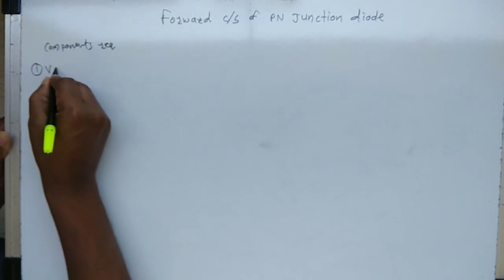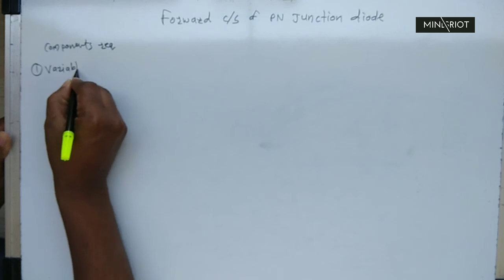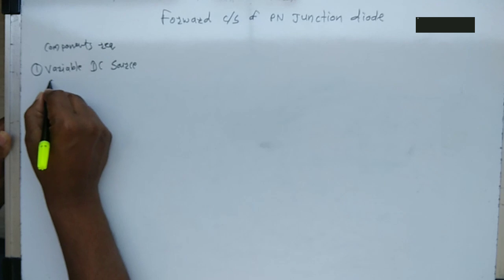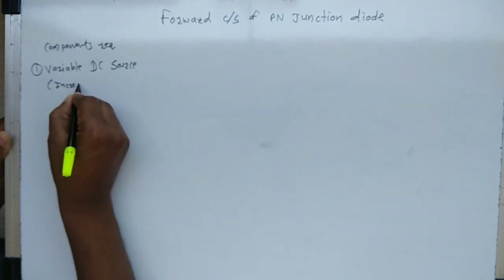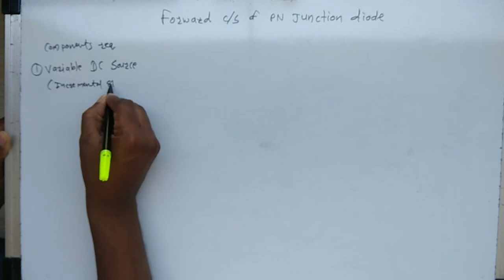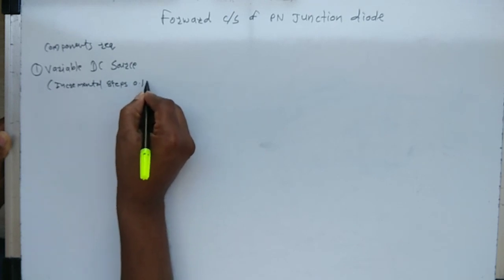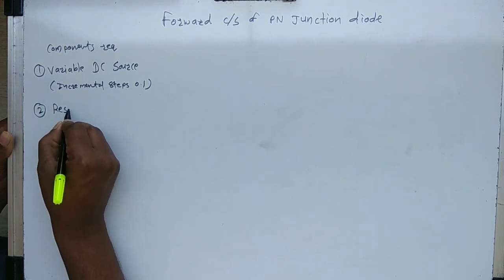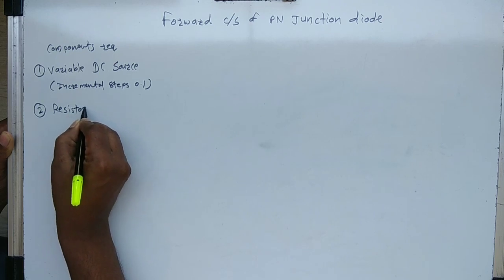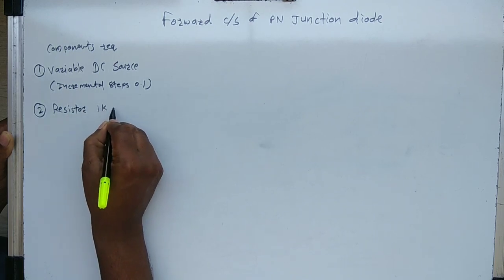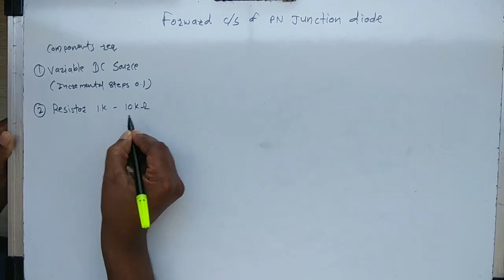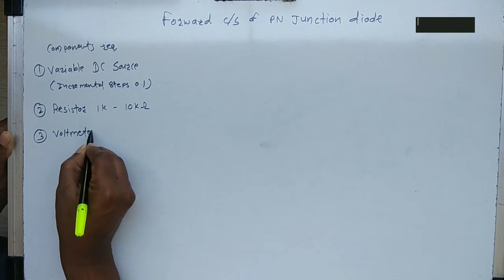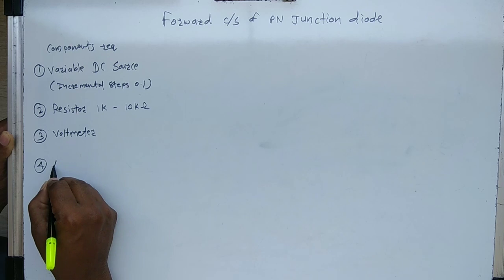Components required: first is a variable DC power source which has incremental steps of 0.1. Consider the diode as a component for this practical. Second is a resistor of value 1k to 10k. Third is a voltmeter and last is an ammeter.